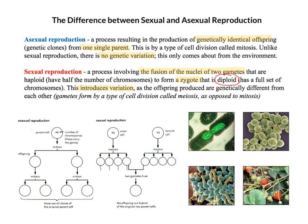I've got a diagram on the bottom left of the screen - a simple one with circles to represent parent cells and offspring. In asexual reproduction, we've got a parent cell with 46 chromosomes. Through asexual reproduction, after mitosis, we produce two genetically identical cells, both with 46 chromosomes. And through subsequent cell divisions via mitosis, we get further cells with 46 chromosomes - these are all clones of the original parent cell.